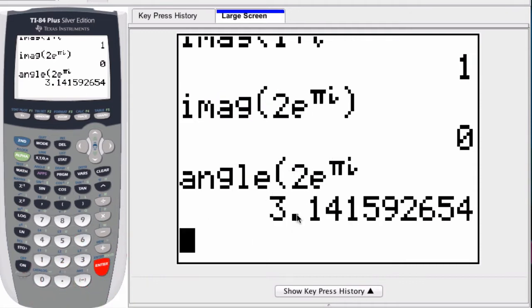the graphing calculator will take the value of theta between negative pi and up to positive pi, exclusive. So we're just pulling that theta value out.